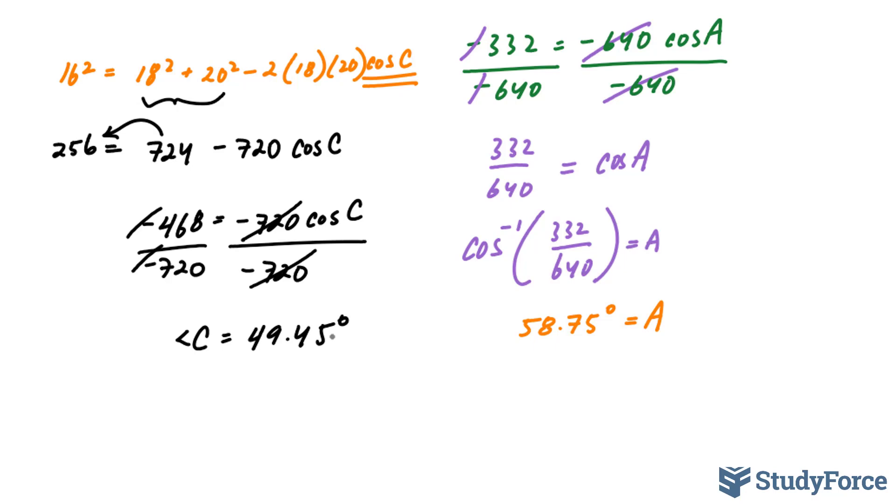To find angle B, we'll take 180°, which is the total sum of angles of a triangle, minus 49.45, minus 58.75.